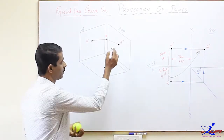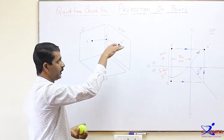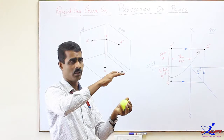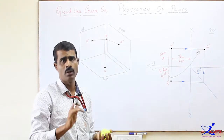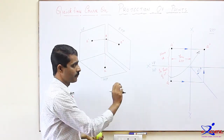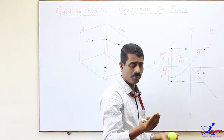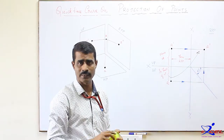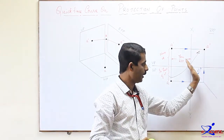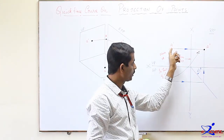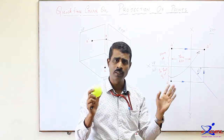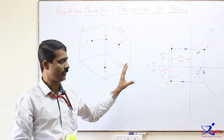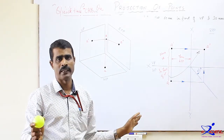The side view and the front view are always at the same height from HP — they share the same horizontal level. The trick to obtain the side view is: rotate the top view by drawing a 45-degree line, and project the front view horizontally. This is general for any quadrant. Let us solve one or two problems on projection of points to make this concept very clear.